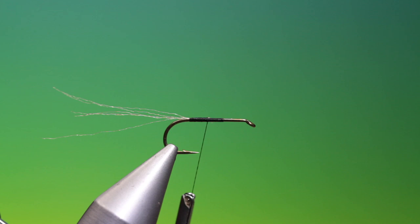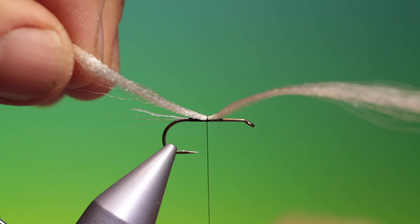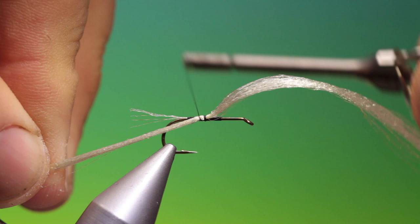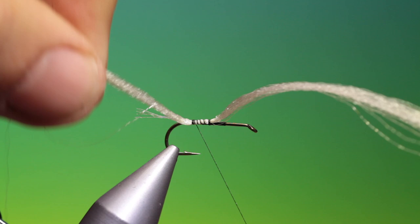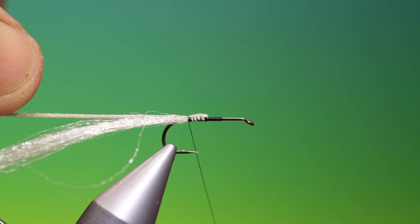We need a short length of cream Antron yarn again. Let me just attach it there, holding one side down. So the Antron is on the side of the hook. We go back to the tail, and then we fold this one over and tie it in on the other side and go up.